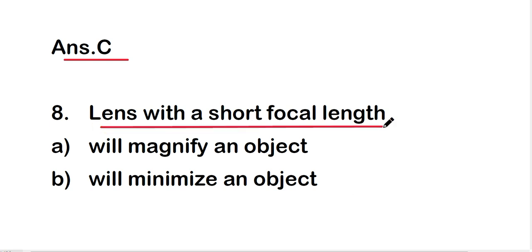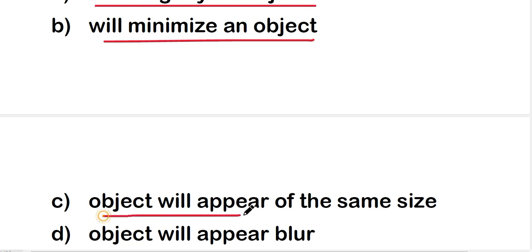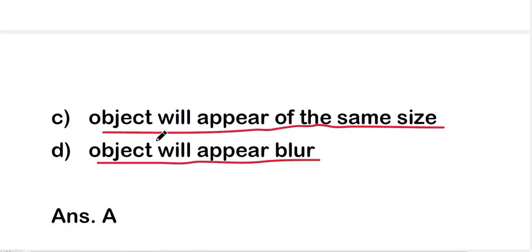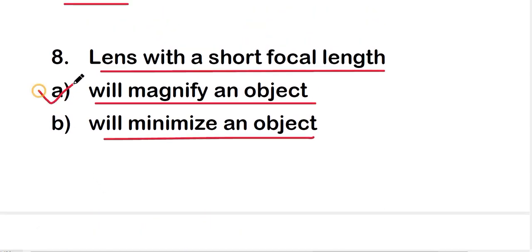A lens with a short focal length will: magnify an object, minimize an object, make the object appear the same size, or make the object appear blurred? The right answer is option A — a lens with a short focal length will magnify an object.